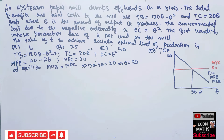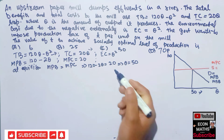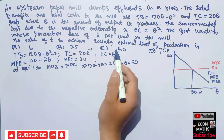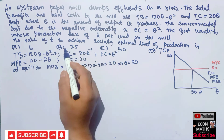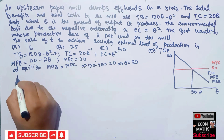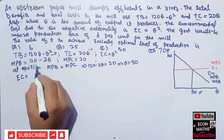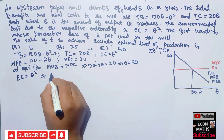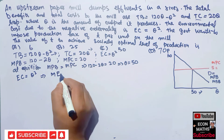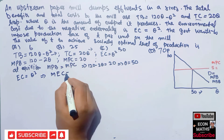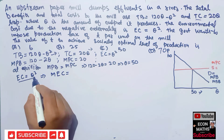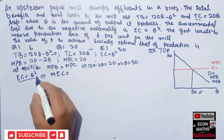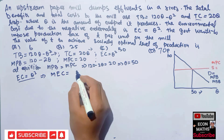Now we will derive the marginal external cost. Our total external cost is given as q squared. That means our marginal external cost is equal to the derivative of the external cost function — the derivative of q squared is 2q. So marginal external cost equals 2q.